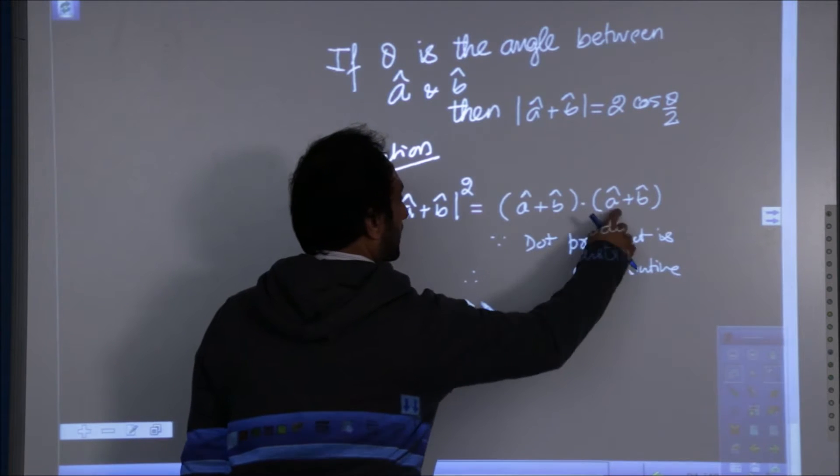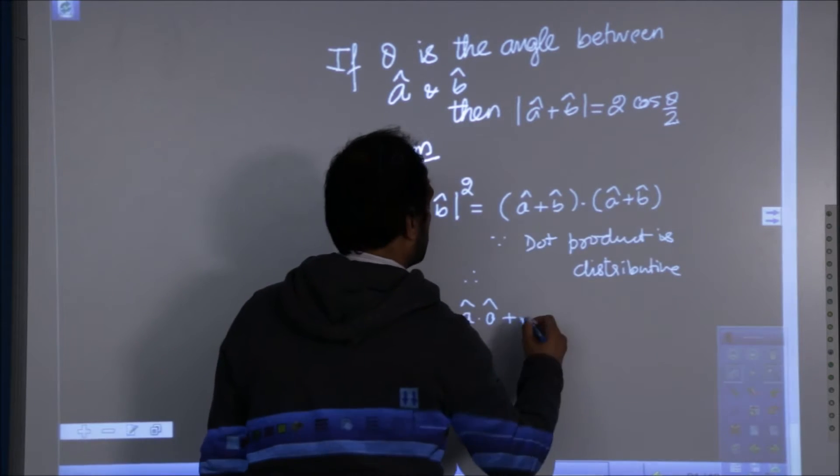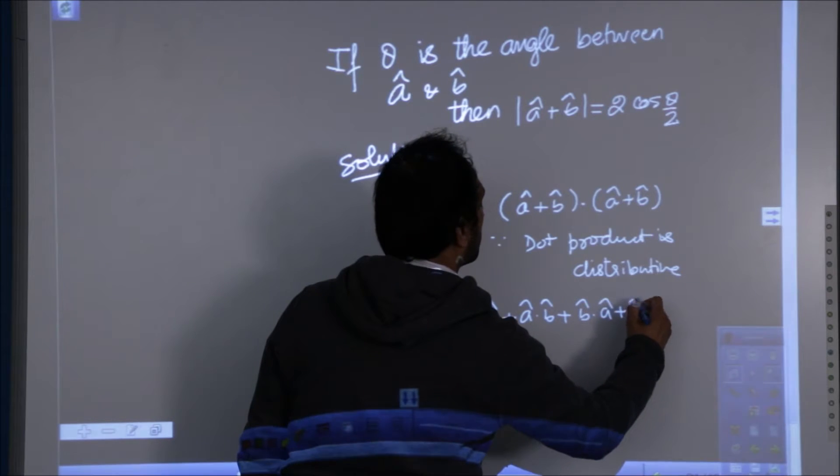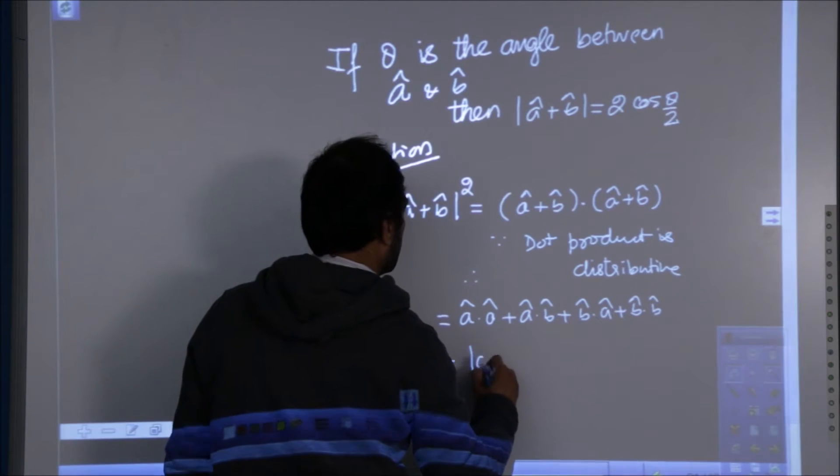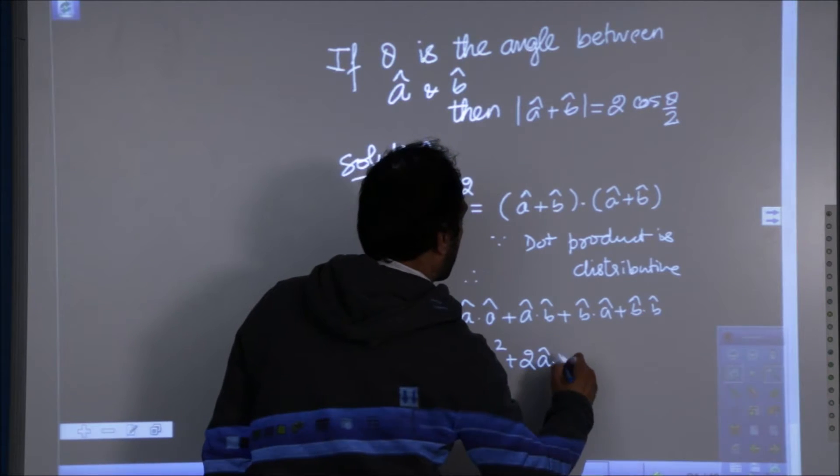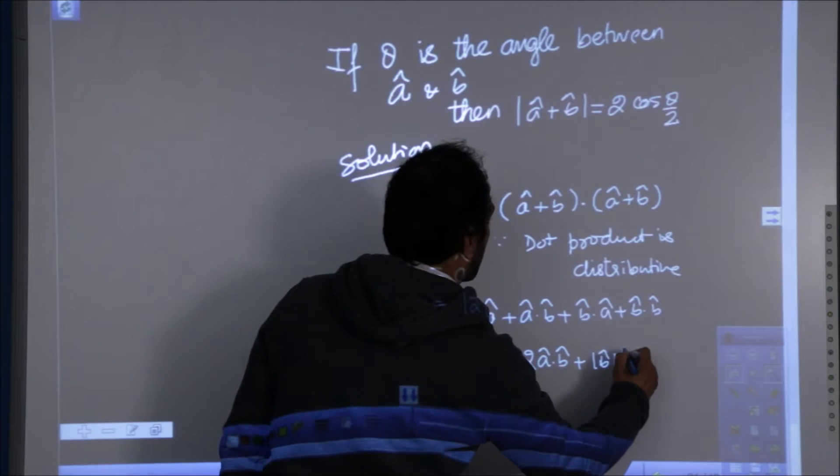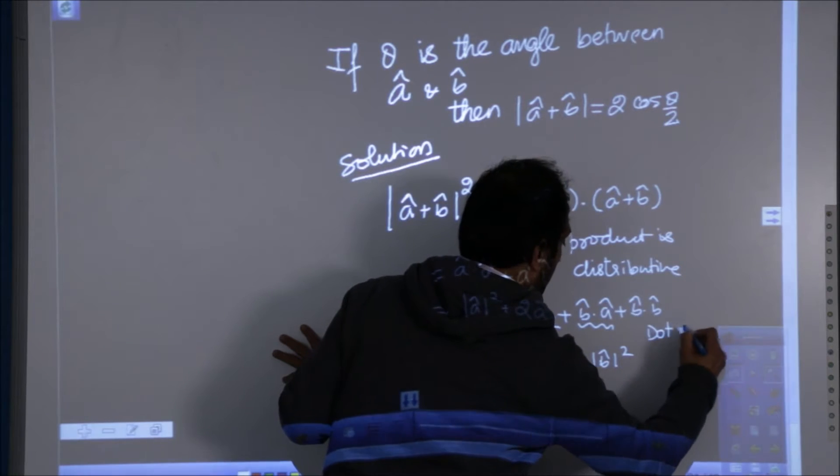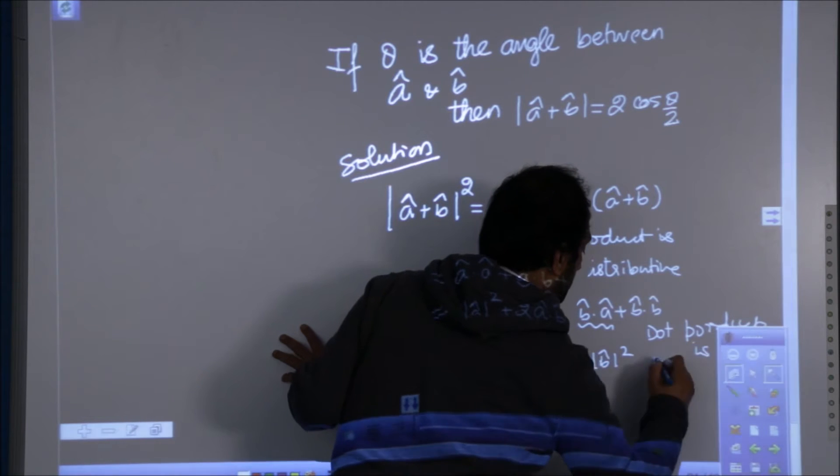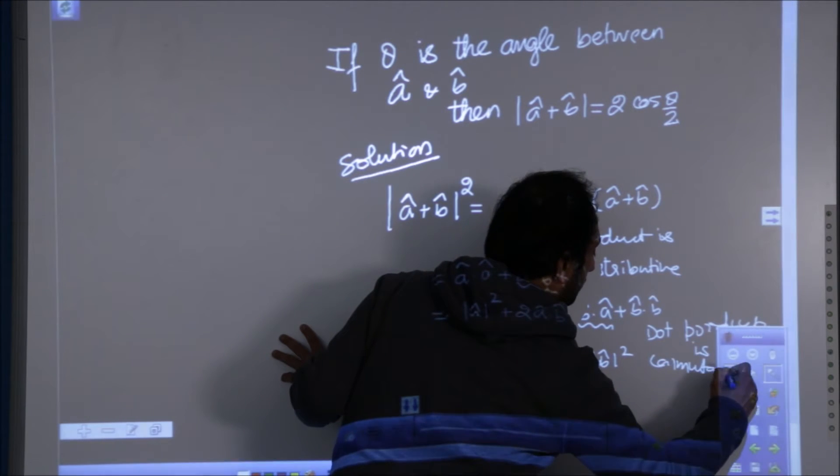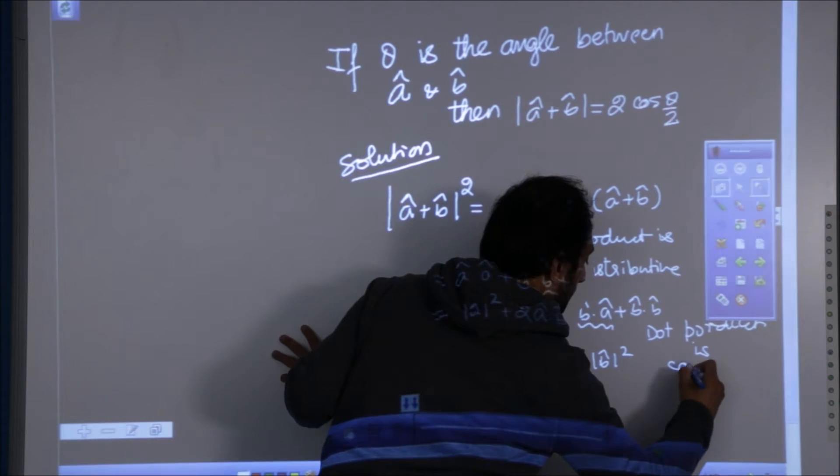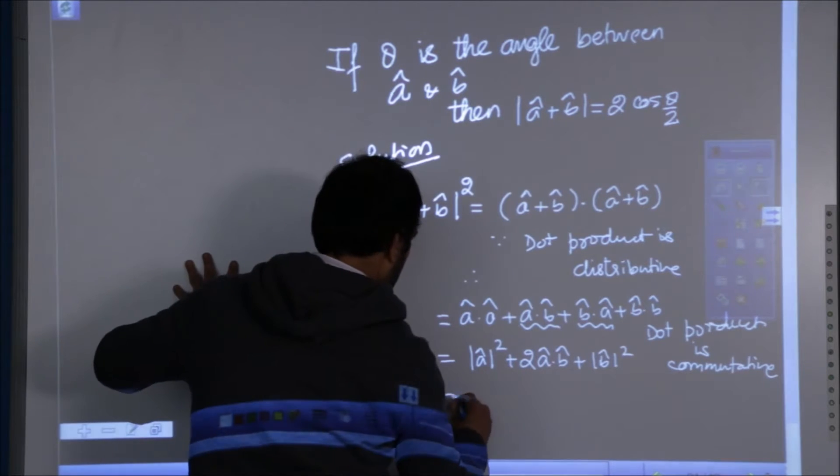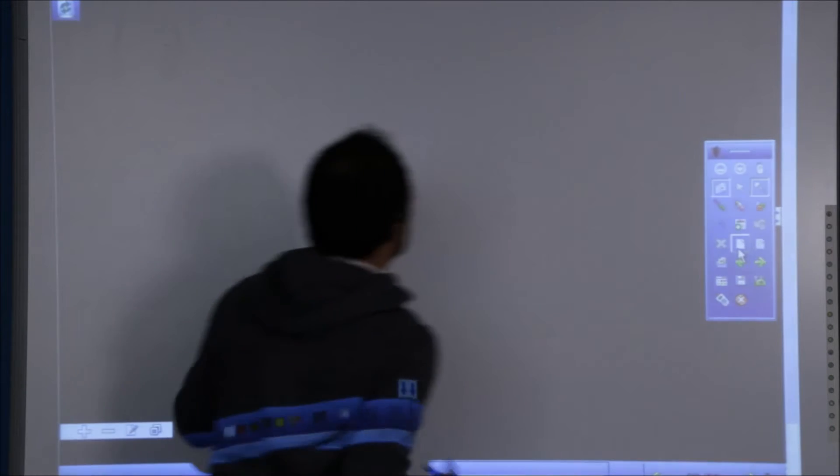we all know that dot product is distributive. Therefore, a dot a plus a dot b plus b dot a plus b dot b. Now, why these two are taken as twice of it? Because dot product is commutative. Now, moving further, I take you to the next page.